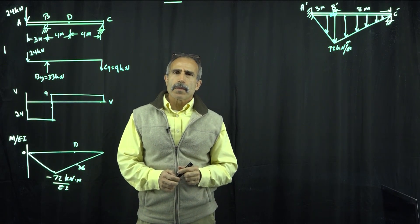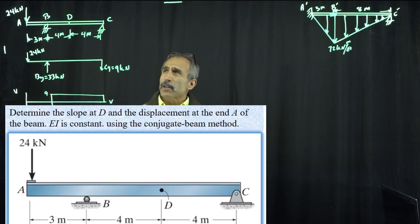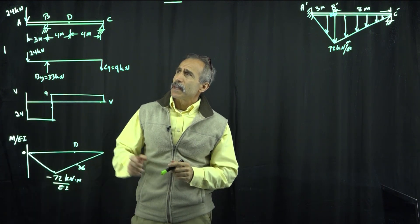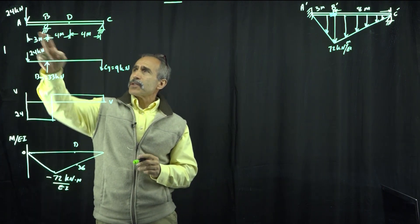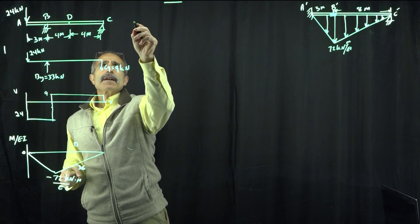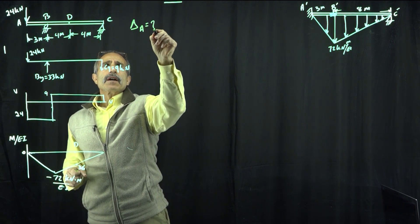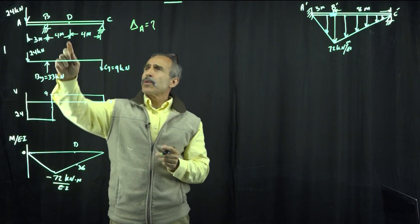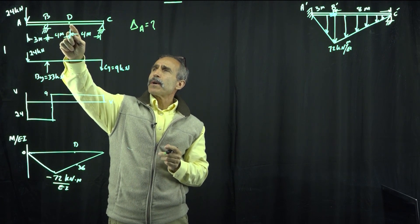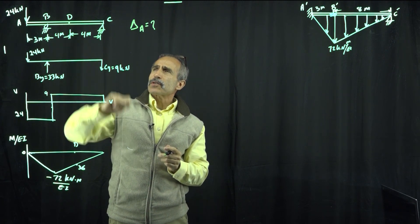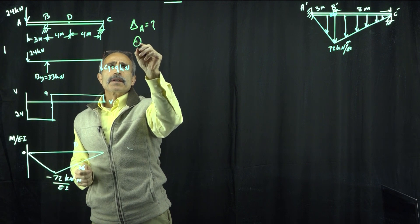Hello. Welcome back to another lecture. In this lecture, we're going to try to calculate the deflection displacement at point A. So we're looking for displacement at point A, and also we're going to look at the slope of the deflection shape at point D. We call that theta D.